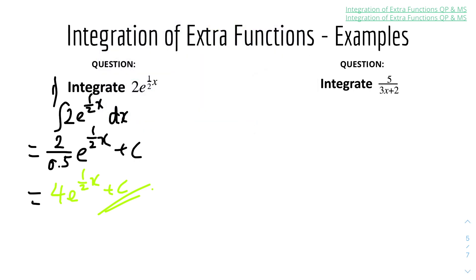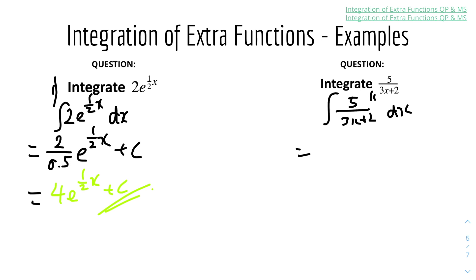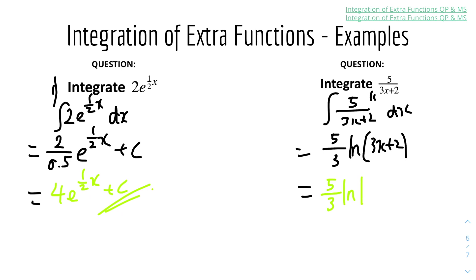Number two: integrate 5 over (3x plus 2) with respect to x. We use the general reciprocal rule. The k value is 5. We take 5 over the derivative of the denominator — the derivative of 3x plus 2 is 3 — giving 5 over 3. Then ln of the denominator bracket: 3x plus 2. So the answer is 5 over 3 times ln of |3x plus 2| plus c.